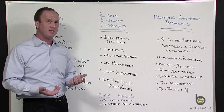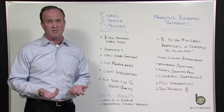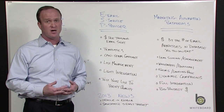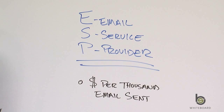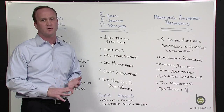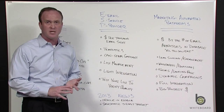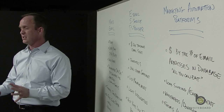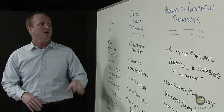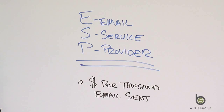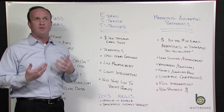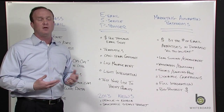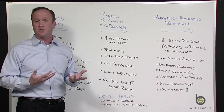If you go to the AppExchange and search mass email, you're going to find probably 50 if not 100 vendors. You've probably heard of a lot of them — Constant Contact, Vertical Response, iContact, MailChimp — there are plenty out there. Email service providers are a little different. They typically charge by the number of emails you send, so typically per thousand emails sent.